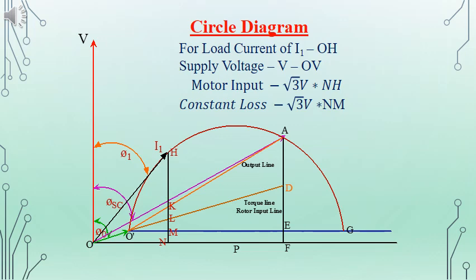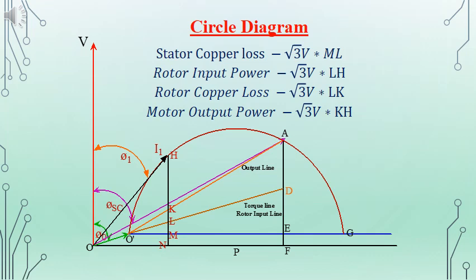The constant loss can similarly be found as root 3V times Nm, where Nm uses the same current scale. The stator copper loss is root 3V times ML. The rotor input power is root 3V times LH. The rotor copper loss is root 3V times LK, and the motor output power is root 3V times KH. For output power, we consider the portion above the output line; for rotor input, the portion above the rotor input or torque line; and for stator and rotor copper losses, the portions corresponding to AD and DE for the given current.